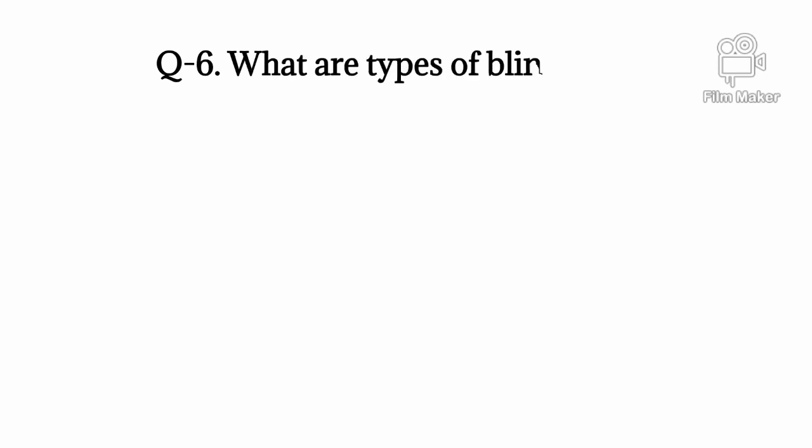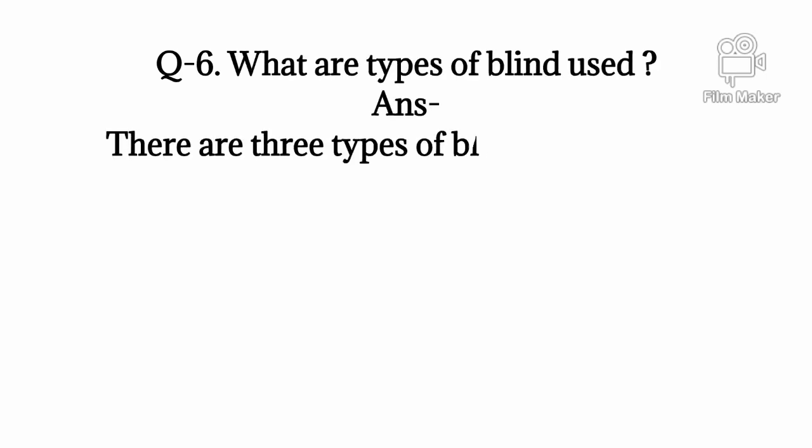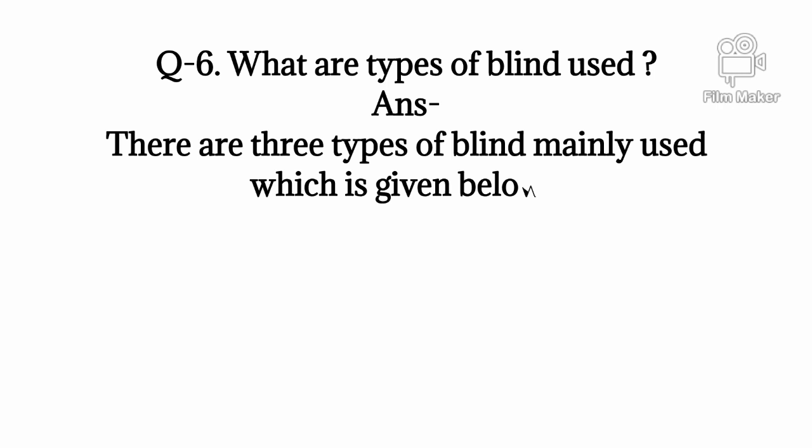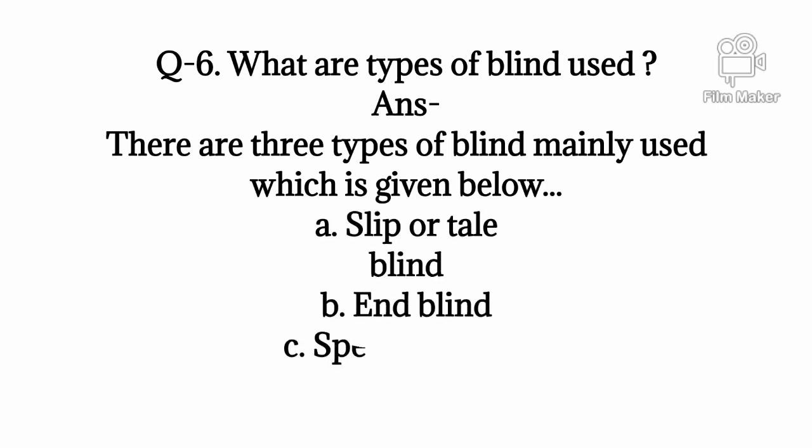Q6: What are types of blind used? Answer: There are 3 types of blind mainly used which is given below. A: Slip or tail blind, B: End blind, C: Spectacle Blind.